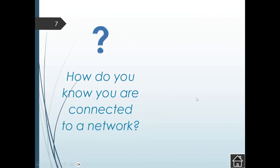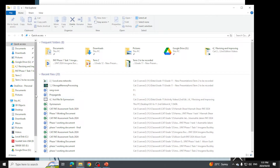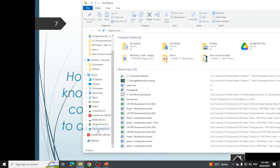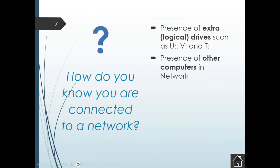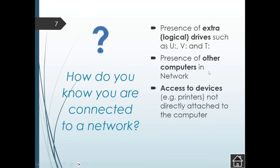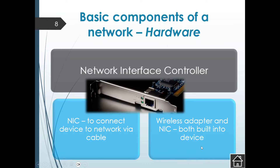How do you know you're connected to a network? When you switch on your PC and log in, you may open File Explorer and suddenly see that there are more drives — for example, a server drive. You'll also see the presence of other computers in the network, access to devices like printers not directly attached to your computer, and usually a network activity indicator in the notification area.